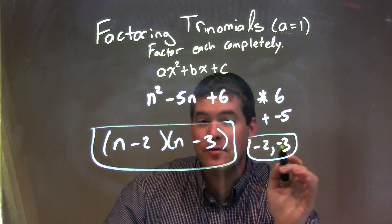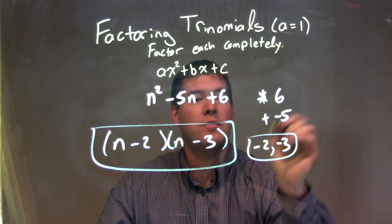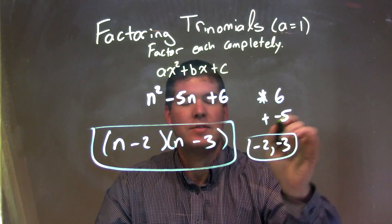Those two numbers are negative 2 and negative 3. Negative 2 times negative 3 is positive 6, and negative 2 plus negative 3 is negative 5.